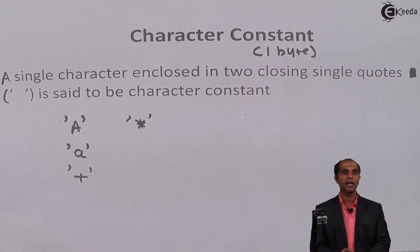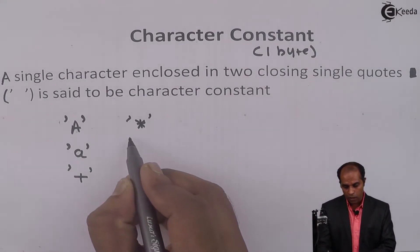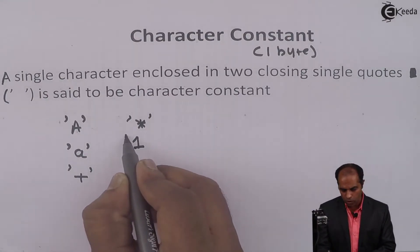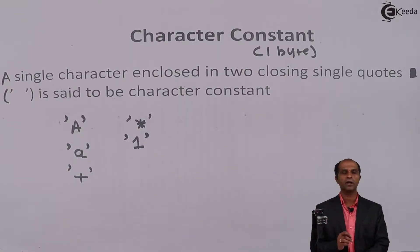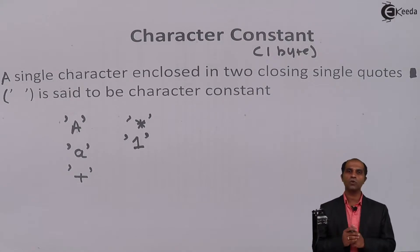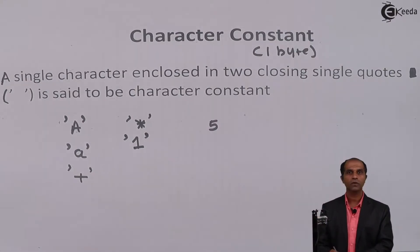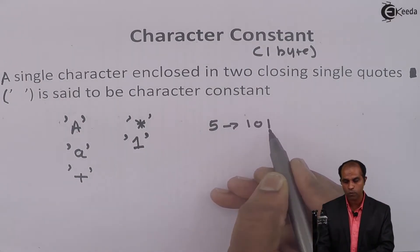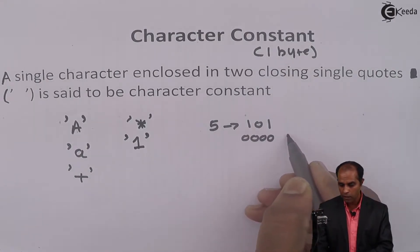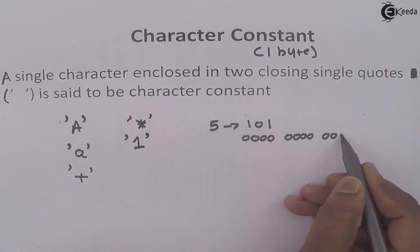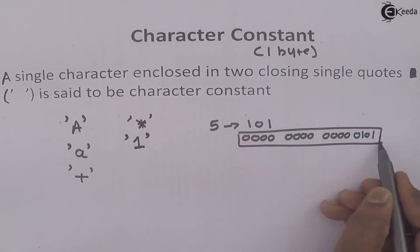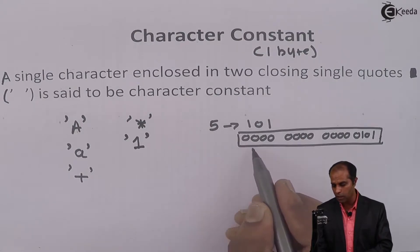A character constant occupies one byte of memory, which means it takes eight bits. If I write 1 without quotes, you identify it as an integer constant, whereas if quoted within single quotes we call it a character constant. For example, the number 5 stored in binary is 101. Since 5 is an integer constant it has to be 16 bits, so we add 13 additional leading zeros. This is the actual binary representation of 5 in memory as two bytes.